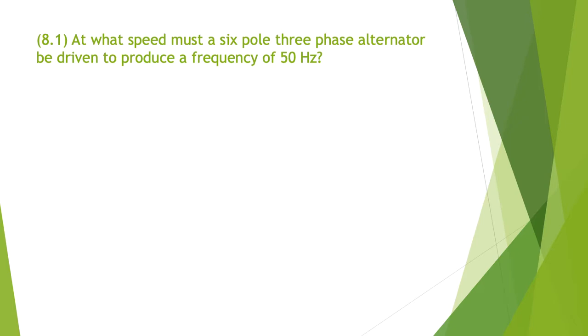So our first problem is 8.1: At what speed must a six pole three-phase alternator be driven to produce a frequency of 50 Hertz? For this one you'll need to go to the textbook, page 573 of Electrical Principles by Phillips edition two or three.